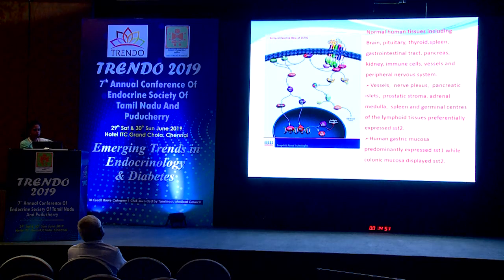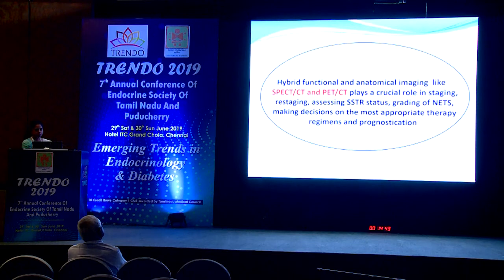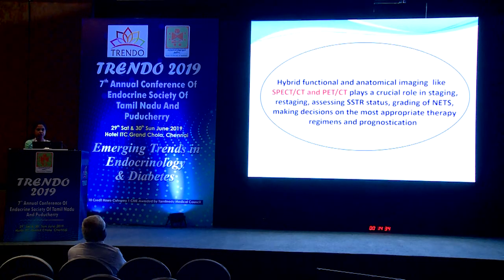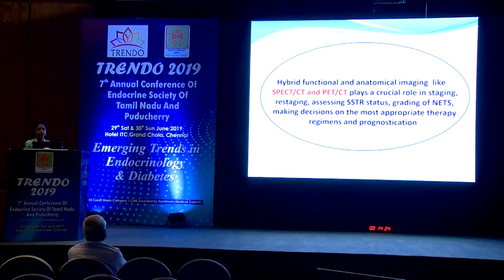Somatostatin receptors are present in many normal human tissues. Hybrid functional and anatomical imaging — SPECT-CT and PET-CT — play a crucial role in staging, restaging, assessing somatostatin receptor status, and grading NETs. Assessing receptor status is important to make decisions on the most appropriate therapy regimens and for prognostication of tumors.